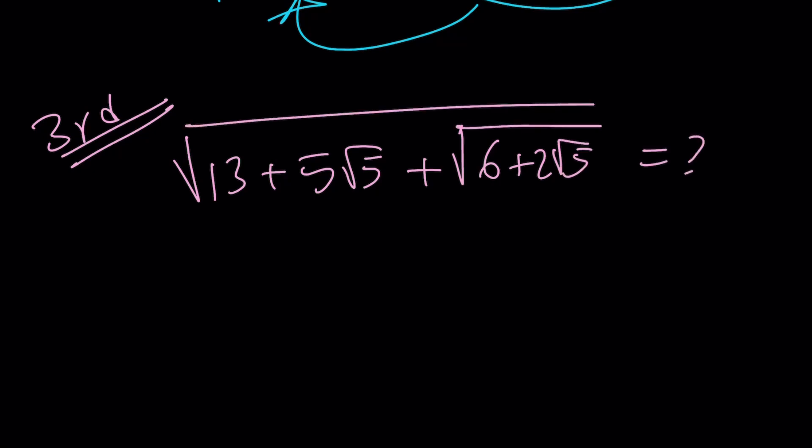For the third method, let me rewrite the original problem again. This was the original problem where we have to denest a few times. And now here's what we're going to do. We're going to focus on this again. So, how do you simplify? That's critical, right? I mean, before I can simplify that, I can't really do it.